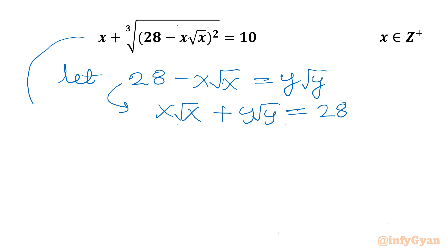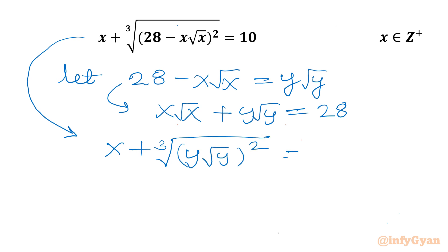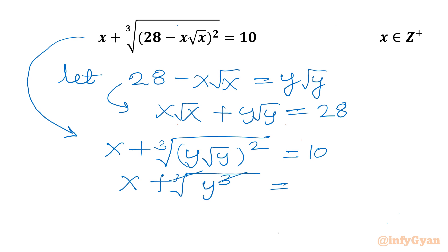Now let's see what happens to the equation after substitution. We write x plus cube root of (y√y) whole square equals 10. Now (y√y)² = y² · y = y³, so the cube root and the cube cancel, giving us x plus y equal to 10.